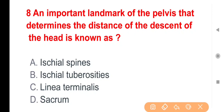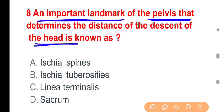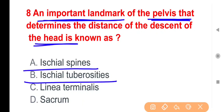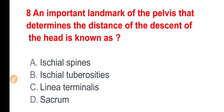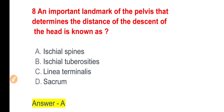Next Question: An important landmark of pelvis that determines the distance of descent of head is known as — पेल्विस में मौजूद वह important landmark जो बताता है कि presenting part delivery के समय कितना descend हुआ है? Options: ischial spine, ischial tuberosity, linea terminalis, या sacrum। The right answer is Option A — it is ischial spine.